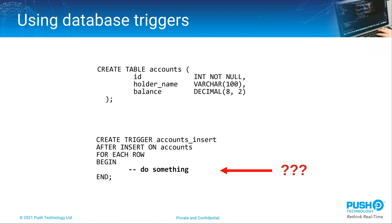Database triggers can get us into a position where we can detect changes to tables as they happen rather than having to poll for them. Most databases have support for triggers though the SQL to create them does vary between vendors. An example like this would run some trigger code when a new row is inserted into the accounts table. We could also have triggers for updates and deletions, and normally the trigger would also give us the before and after state of the data in the row too.